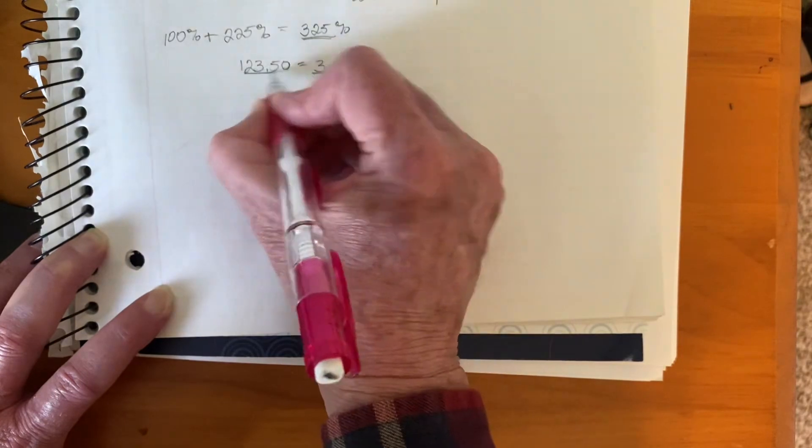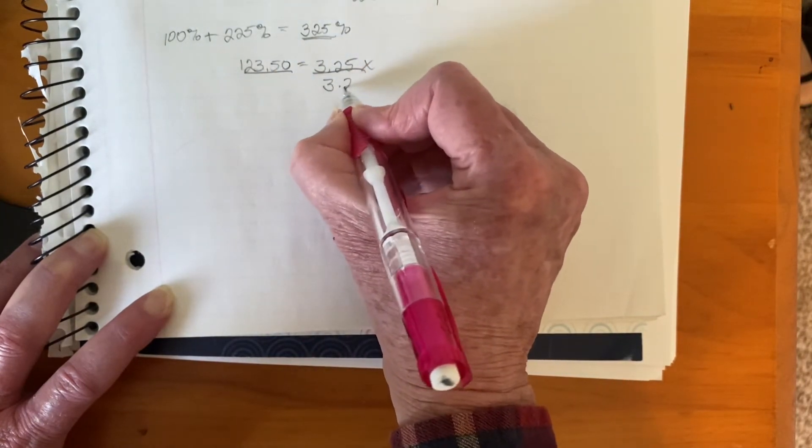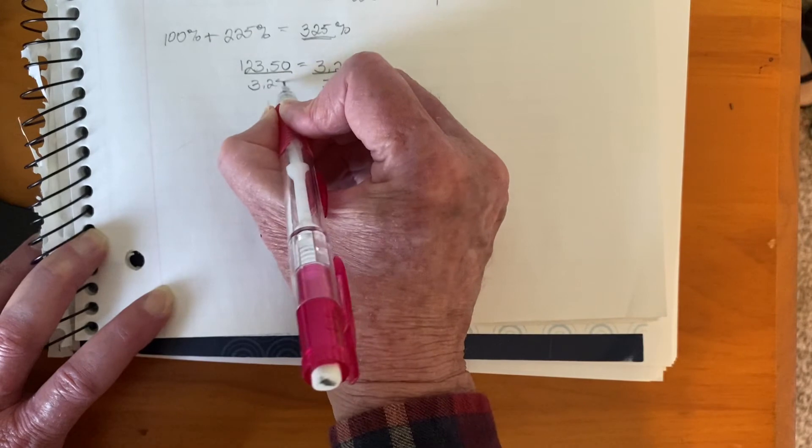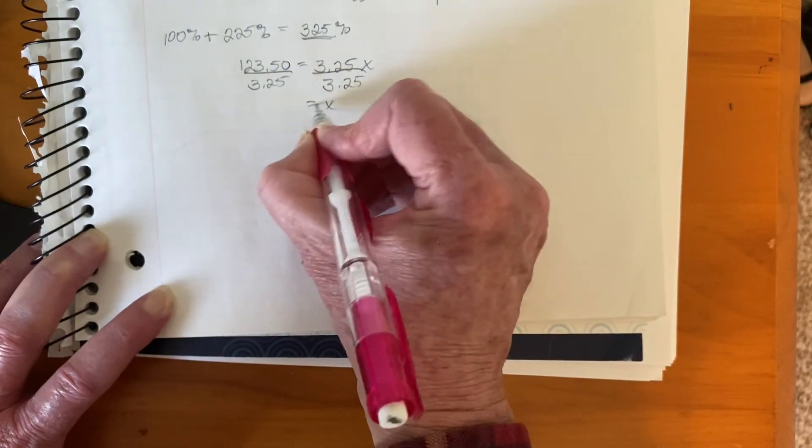So now it's an equation. We can divide both sides by 3.25, and that's going to give us x equals 38.